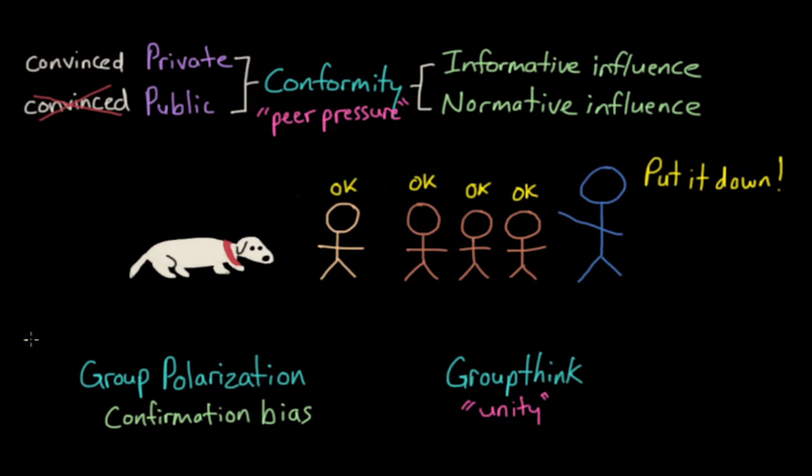If the neighbors had wanted to avoid groupthink, they might have brought in experts or outsiders, or held smaller groups separately to discuss the dog, or had the leader from the group refrain from disclosing their opinion.